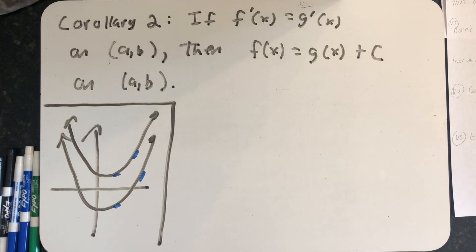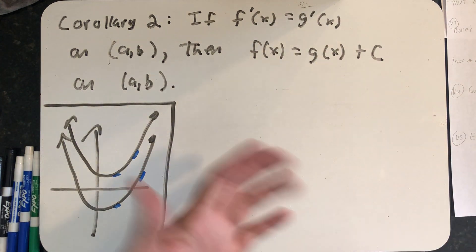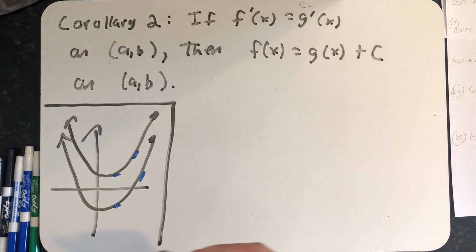Thinking in the way the theorem's written, if I draw a function above or below this so all the tangent lines match, all I have done is move the function either up or down.